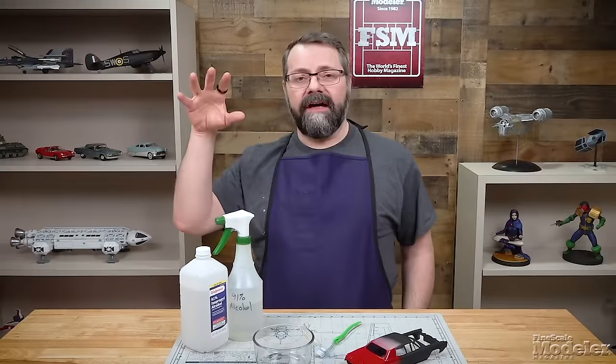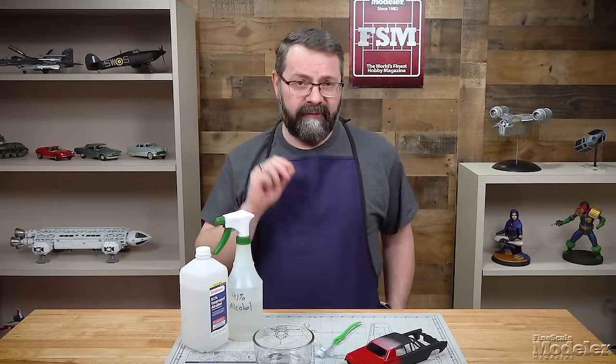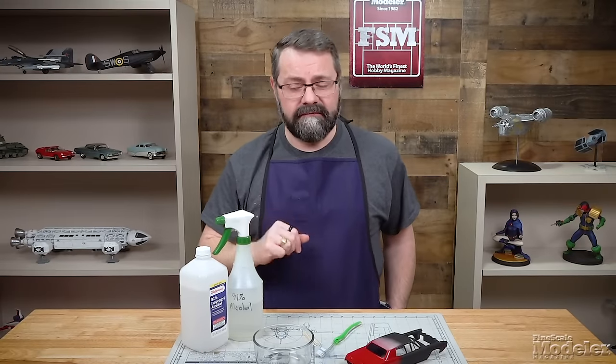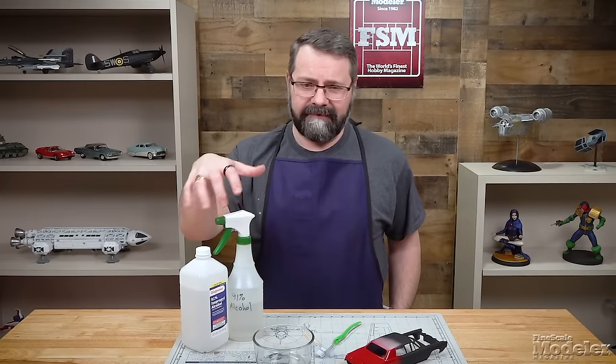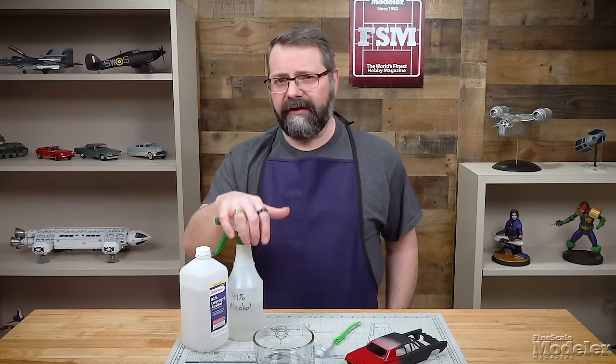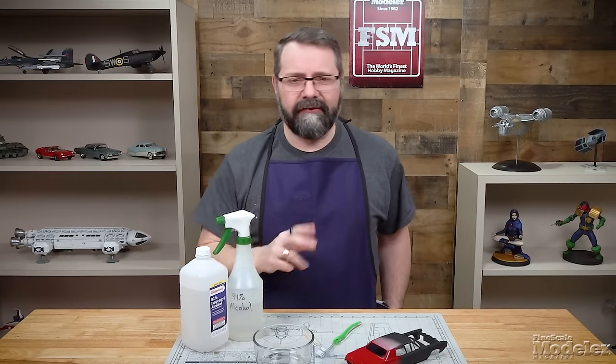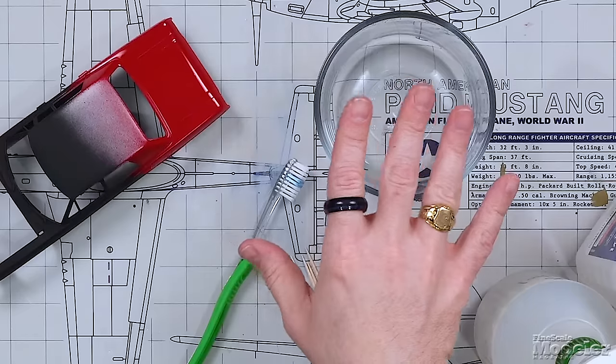To use isopropyl alcohol to remove paint, first you need isopropyl alcohol. Right here we've got some 91%. You will need a reservoir or a dish to soak the part in.